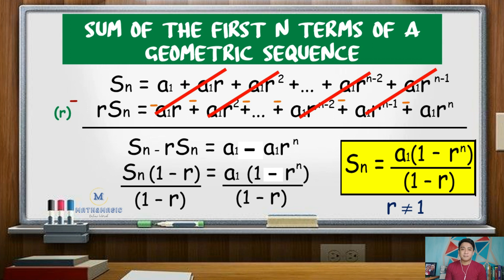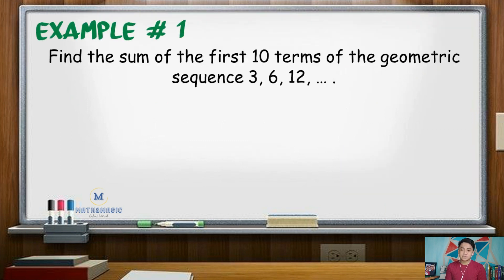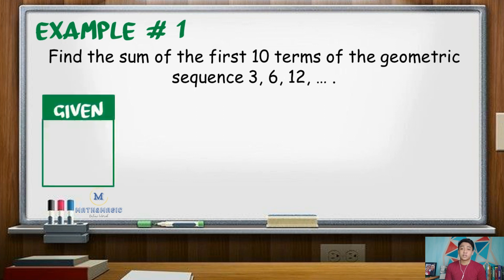For our first example, find the sum of the first 10 terms of the geometric sequence 3, 6, 12, and so on. First, we need to identify the given values. The first term is 3, and since we are looking for the sum of the first 10 terms, n is equal to 10. Also, to find the common ratio, we divide the second term, 6, by the first term, 3, which gives positive 2.